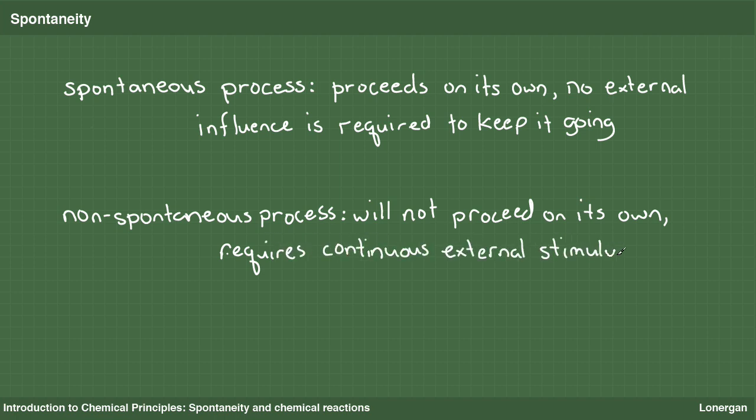Note that the definition of a spontaneous process does not say anything about how fast a process will occur. A spontaneous process will occur, but it could happen within a fraction of a second or take thousands of years. A non-spontaneous process will not occur no matter how long you wait.